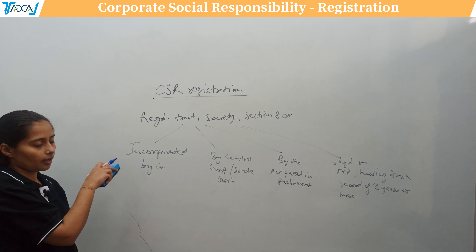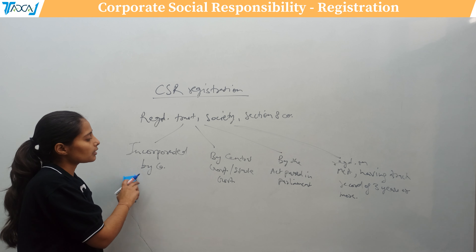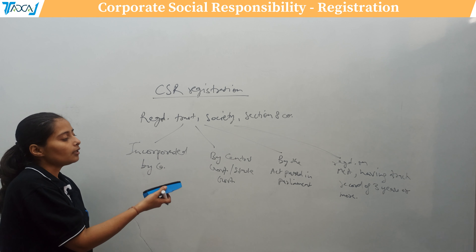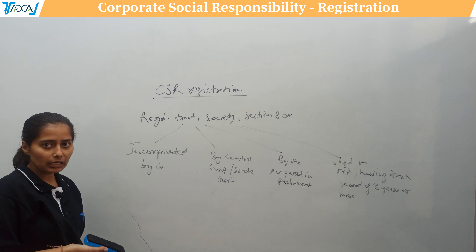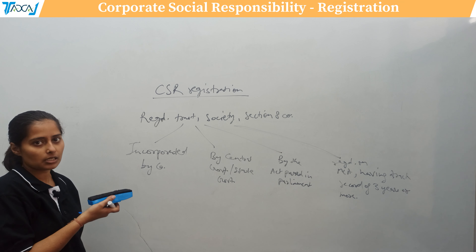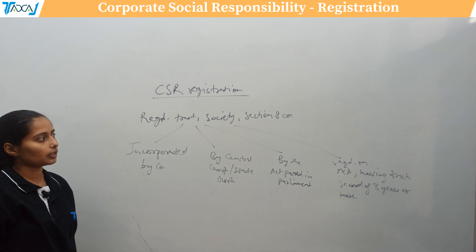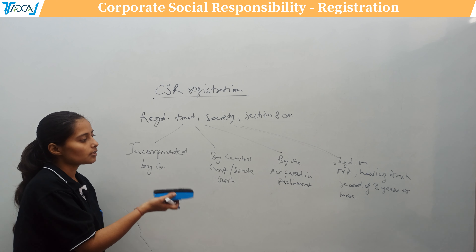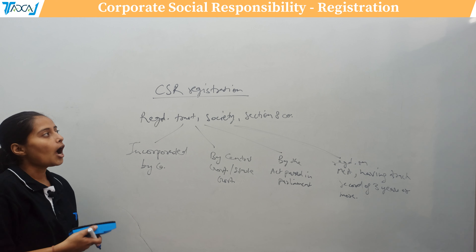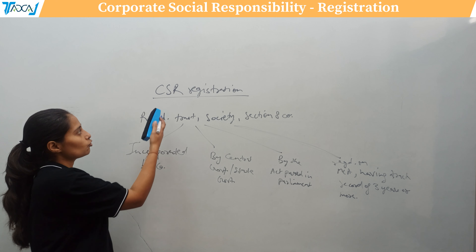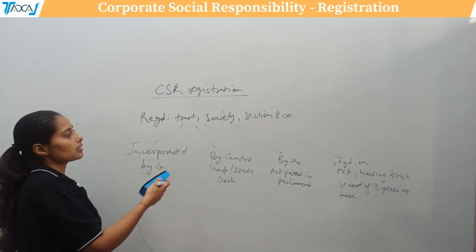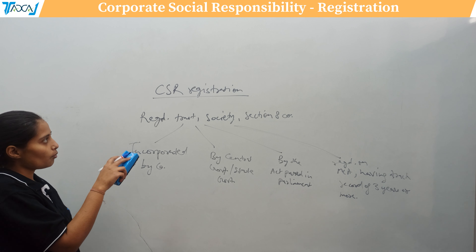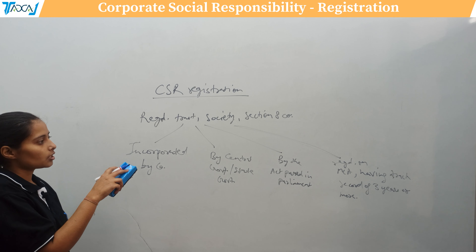If any establishment fulfills this applicability criteria, it can receive CSR funding and undertake CSR activities. But before receiving any CSR funding from a corporate, the establishment must complete registration — known as CSR registration. The form used for this is called CSR-1.